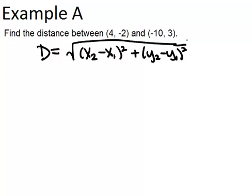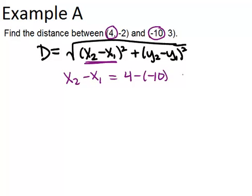You basically need to figure out two different numbers. You need to figure out the difference of the x-coordinates, which you can get by just looking at the two x-coordinates and subtracting them. So x2 minus x1 is just 4 minus negative 10, which is 14.